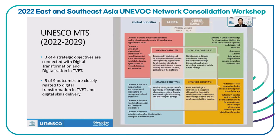In this year, UNESCO has published two strategies. The first one is the UNESCO midterm strategy. In this strategy, we can find that there are four strategy objectives. Among the four objectives, three of them are connected with digital transformation in TVET. And also from the outside circle, there are nine outcomes, five of which are closely related to digital transformation.